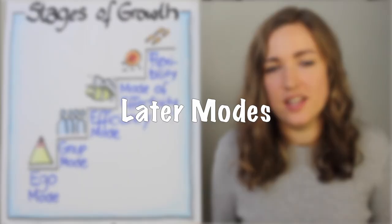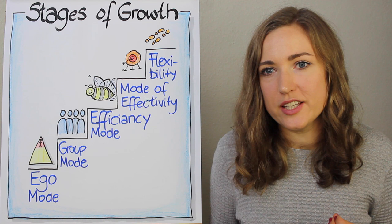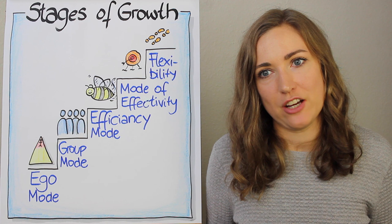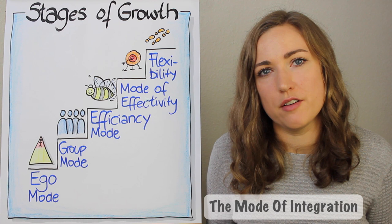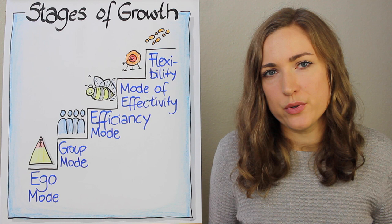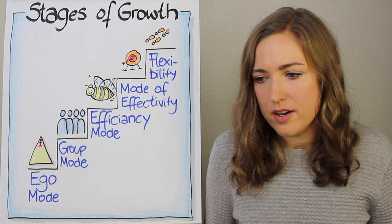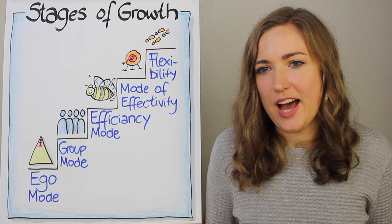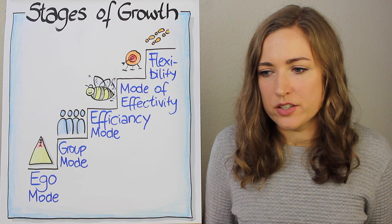Later modes. So psychologists haven't really come to a conclusion yet how many modes there are in total, but there are two more modes coming after the mode of flexibility that psychologists pretty much agree on. And this is firstly the mode of integration. This is a mode in which people become more able to integrate things that seem paradox on other modes and they are very aware of what they are thinking about or what is in their mind at any given moment. They have the ability to understand how language creates reality and they learn to rely on non-rational sources of knowledge.